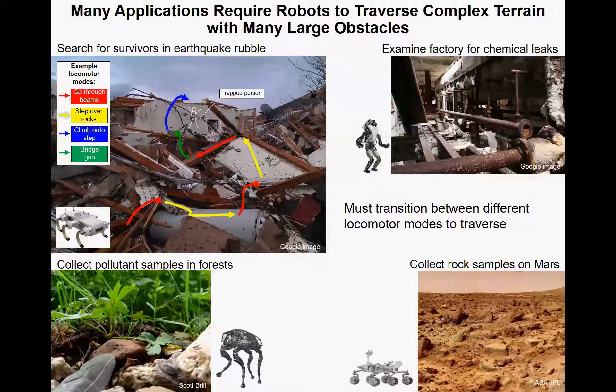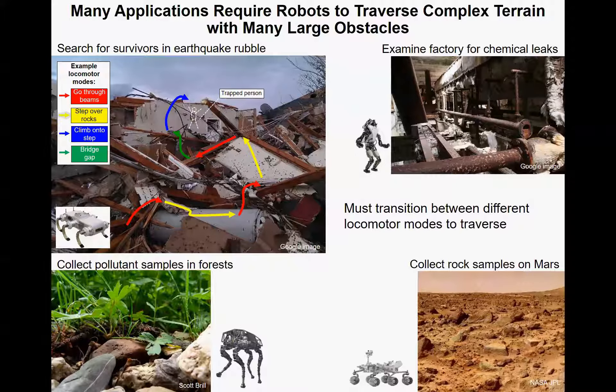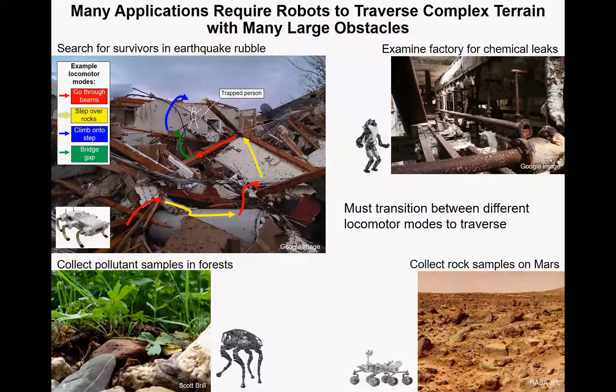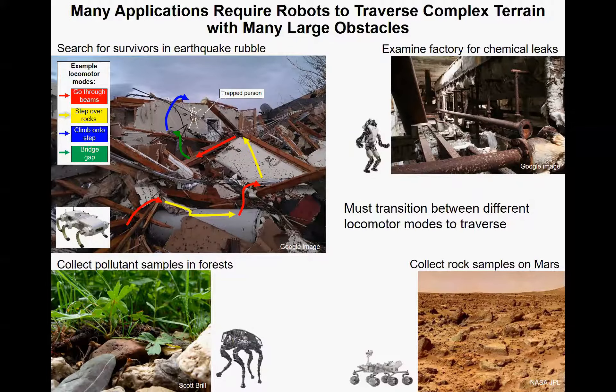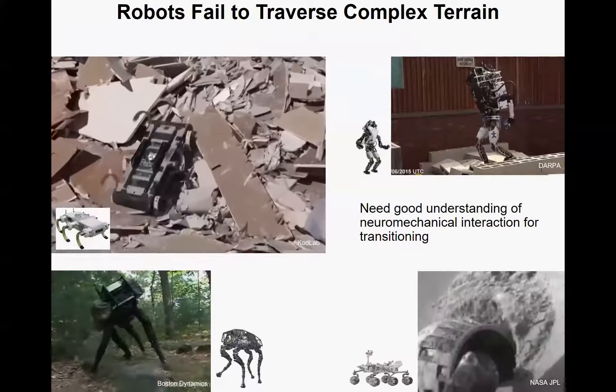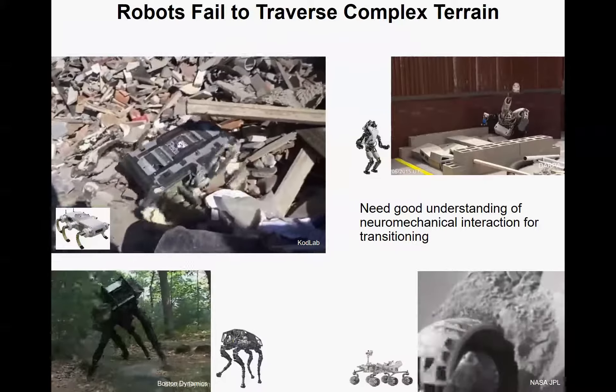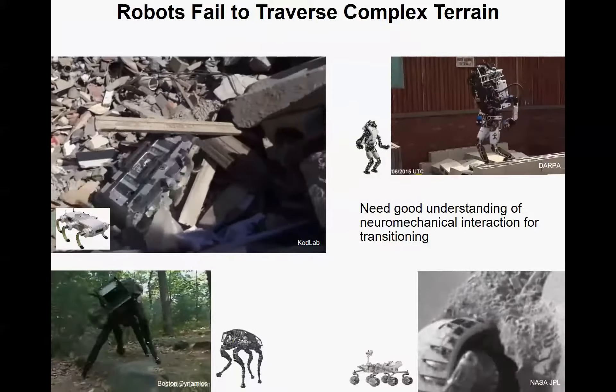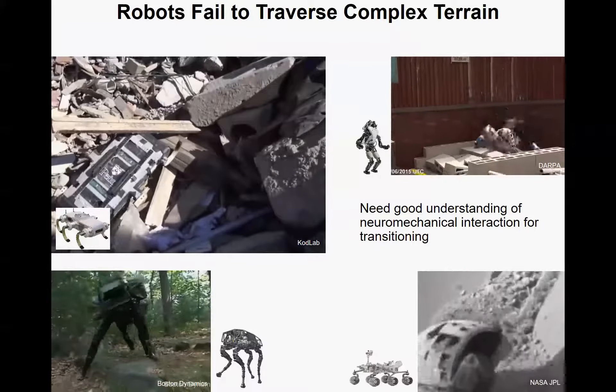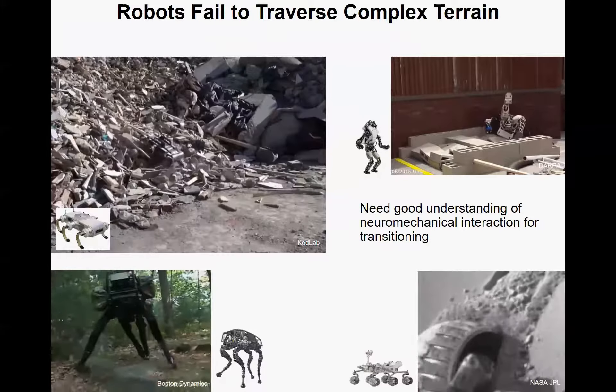However, there are many applications where robots are required to traverse complex terrain with many large obstacles, even comparable to their body size. Even the best terrestrial robots struggle to traverse this terrain because we don't have a good understanding of neuromechanical interaction for transitioning.